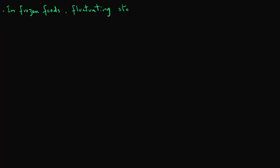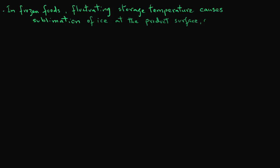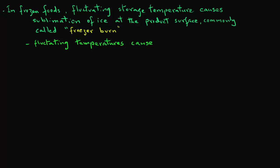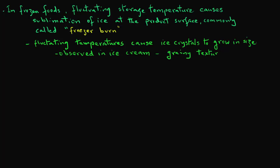In frozen foods held at sub-freezing temperatures during storage, fluctuation of storage temperature can cause sublimation of ice at the product surface, resulting in a common defect called freezer burn. With temperature fluctuations, ice crystals in frozen foods grow in size. This recrystallization phenomenon is commonly observed during storage of ice cream, when the texture becomes grainy over time.